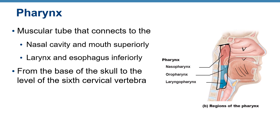The pharynx is divided into three parts. The nasopharynx is posterior to the nasal cavity. The oropharynx is posterior to the oral cavity. The epiglottis cartilage is visible here, and posterior to it is the laryngopharynx, with the larynx anteriorly and the esophagus posteriorly.